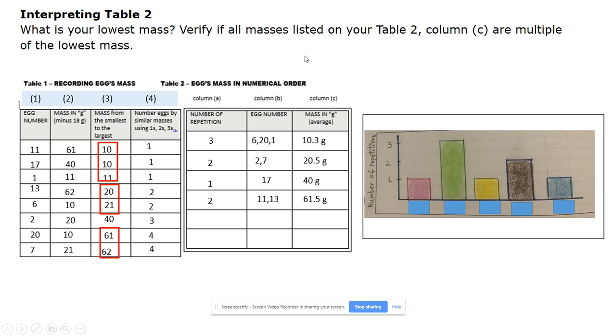What is your lowest mass? Your lowest mass is going to be the first mass that you see in column C of table 2. Verify that all masses listed on your table 2 are multiples of the first number.